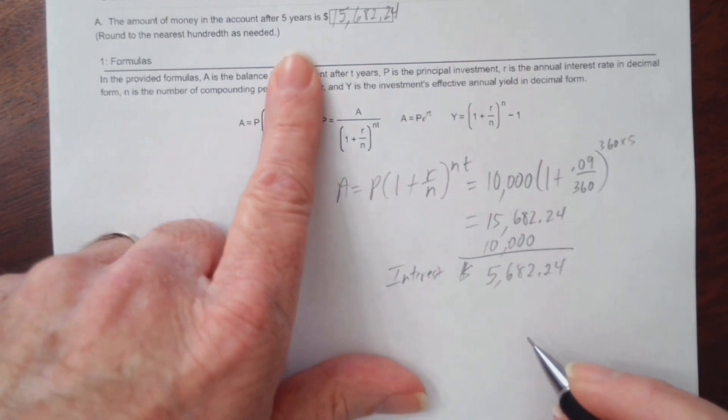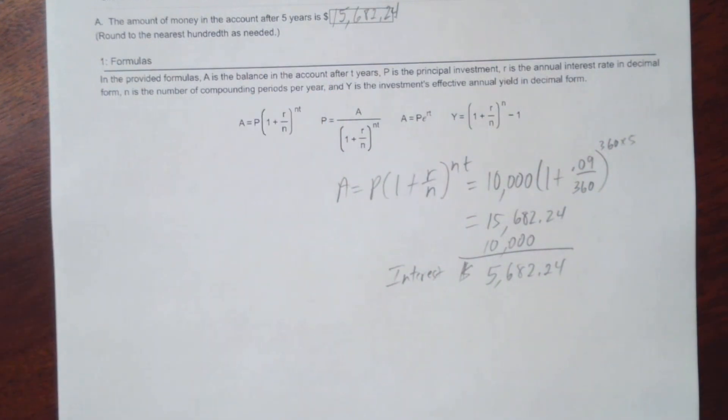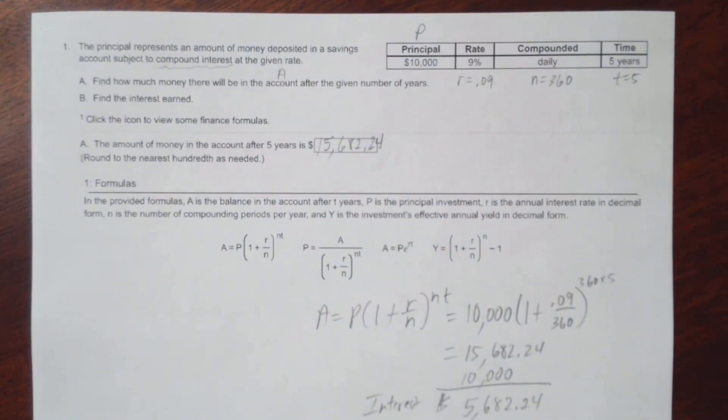And up here we found the amount of money after, or the amount of money in the account after 5 years. Alright, which was $15,682.24. Okay, so I hope that helps. Let me know if you still have any questions or any problems.